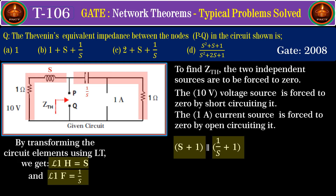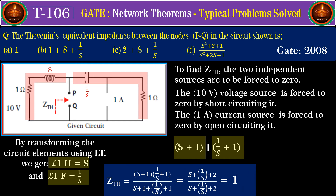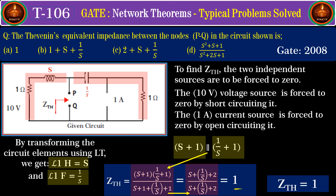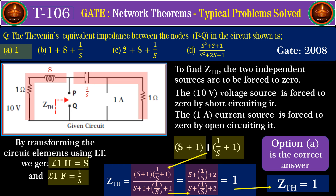These two series combinations are in parallel with each other: (s plus 1) parallel with (1/s plus 1). The Thevenin's impedance equals (s plus 1) times (1/s plus 1) divided by (s plus 1 plus 1/s plus 1). Solving gives (s plus 1)/(s plus 2) divided by (s plus 1)/(s plus 2), and since both numerator and denominator are the same, Z_thevenin equals 1. Hence option A is the correct answer.